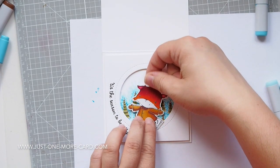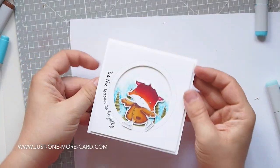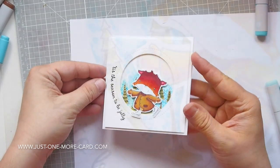Using foam tape to adhere the panel and the fox. At the very end, I'm not sure if I'm showing this here in the video or not, I used my white gel pen to add some snowy dots.